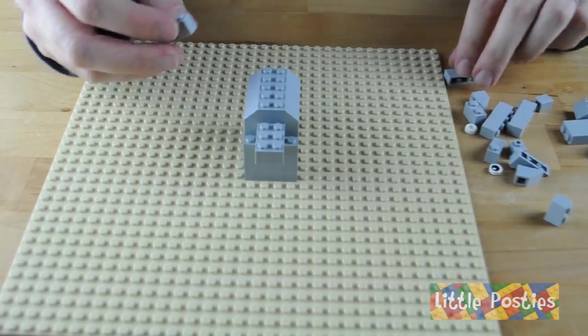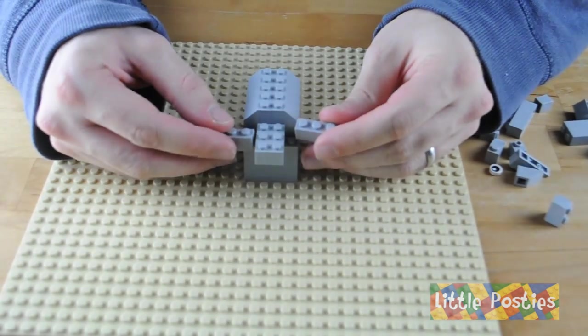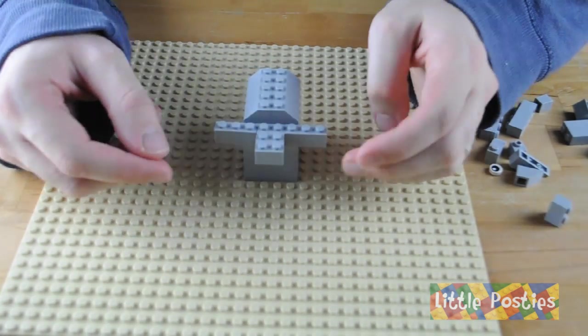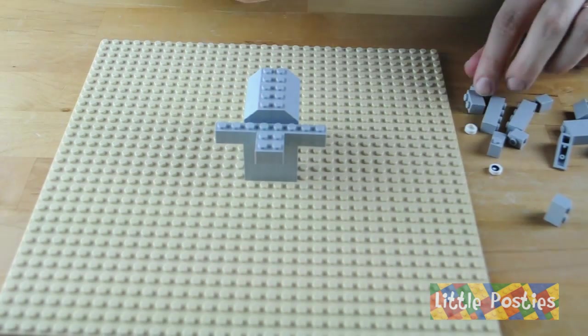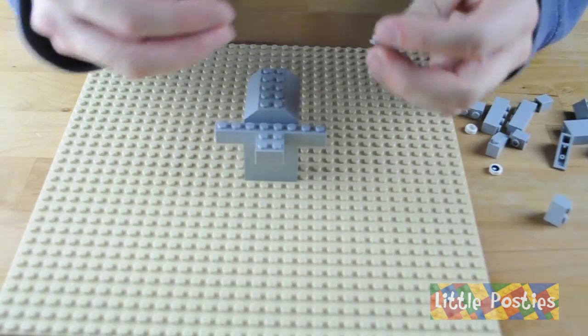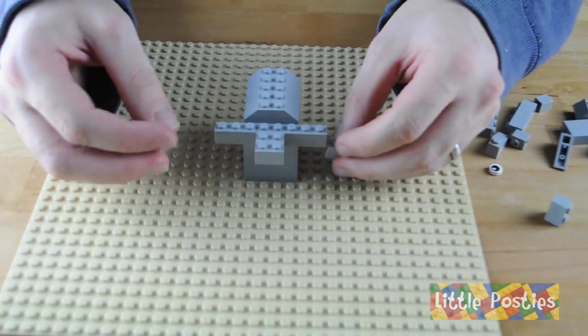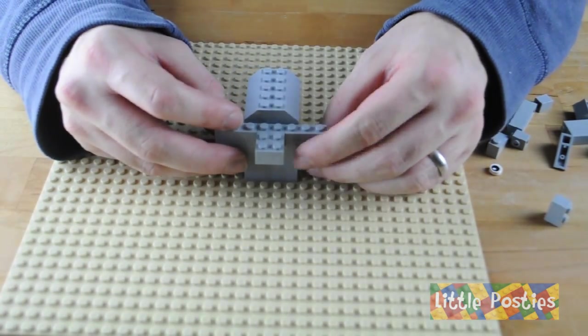Then grab your 1x3's and put them either side. Then you get your 1x2 inverted slopes and you put them underneath the ears. This can be a bit tricky so just take your time.